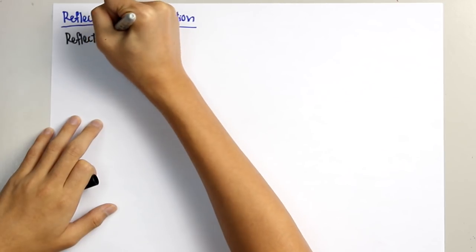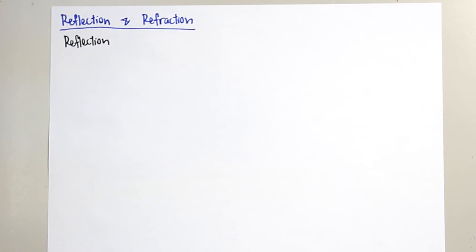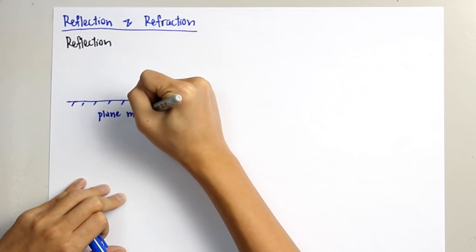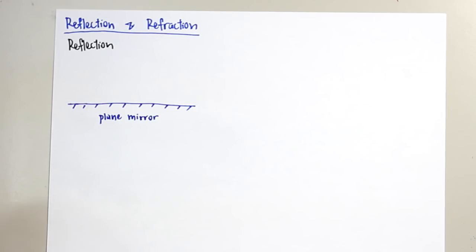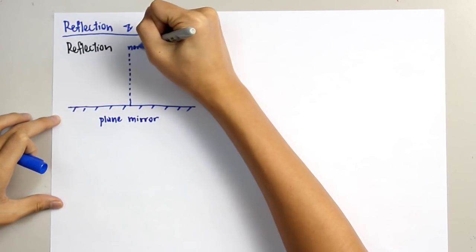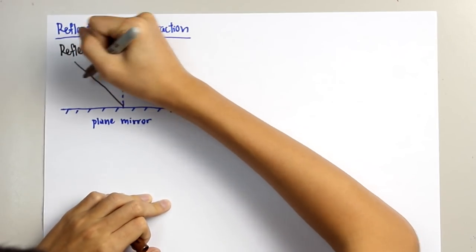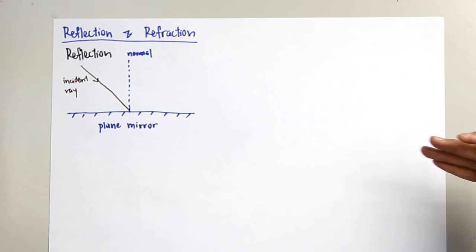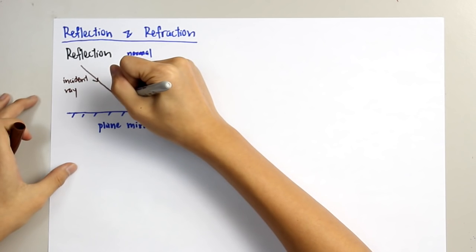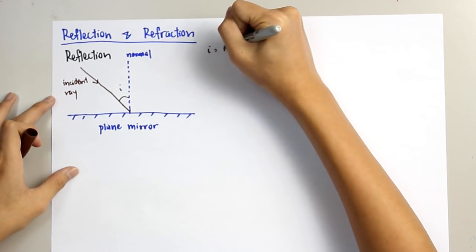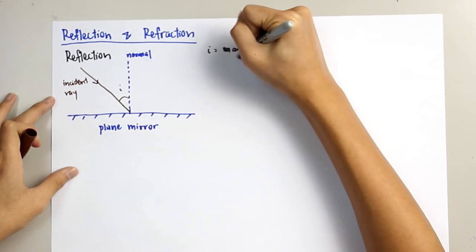First thing: reflection. When will reflection occur? The answer is when there is a mirror. This is a plane mirror. Before we do the explanation, we need to draw a normal line to the surface of the plane mirror. When there is a mirror and we give an incident ray directed onto the plane mirror, the angle between the incident ray and the normal line is called the angle of incidence.